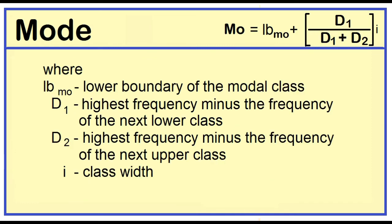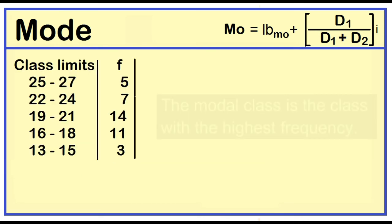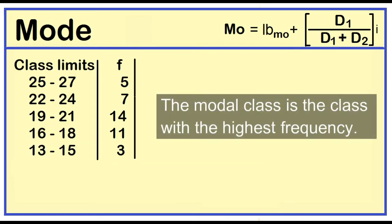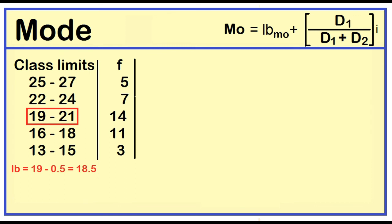Mode is equal to the lower boundary of the modal class plus the product of D₁ over D₁ plus D₂, times the class width. D₁ is the highest frequency minus the frequency of the next lower class. D₂ is the highest frequency minus the frequency of the next upper class. I is the class width. The modal class is the class with the highest frequency. The highest frequency is 14 and the modal class is 19 to 21. The lower boundary of the modal class is 18.5.